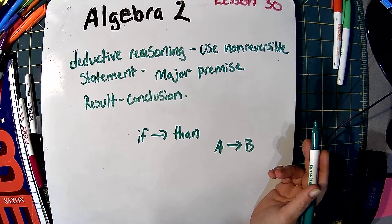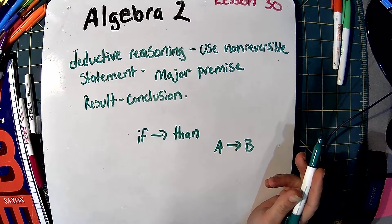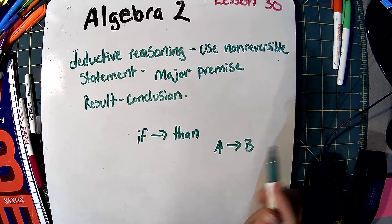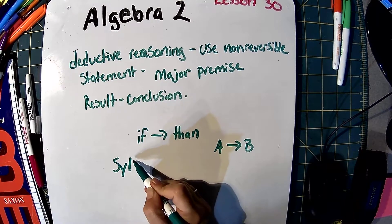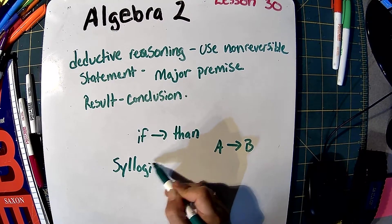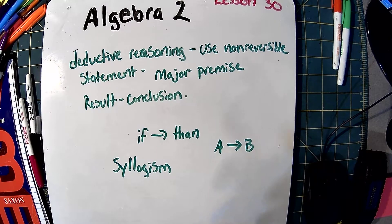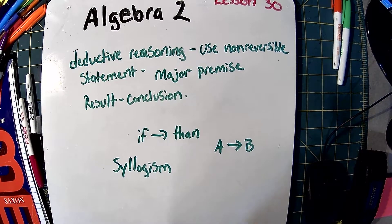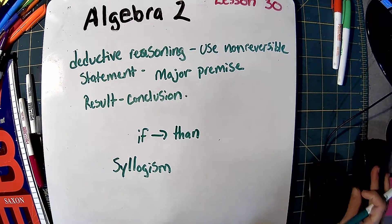The three-step deductive reasoning process consists of a major premise, a minor premise, and a conclusion, and that's called a syllogism. That means you used a major premise to come up with an answer. Let's go over one that makes more sense than the squares.